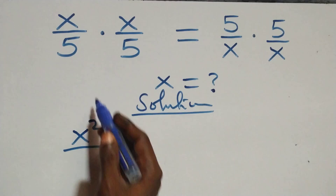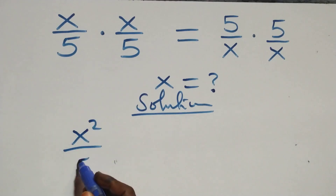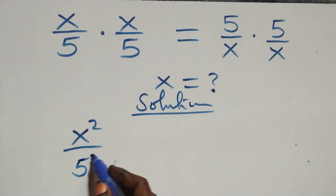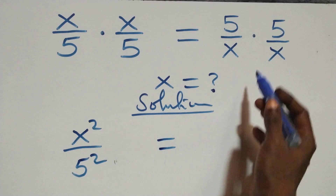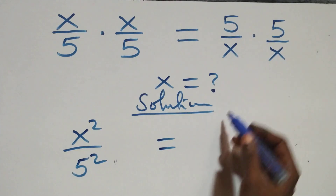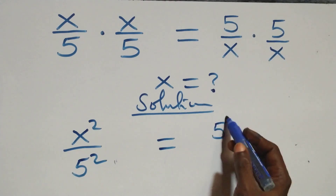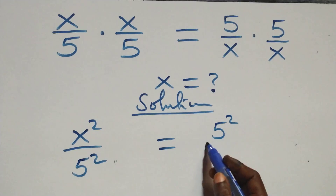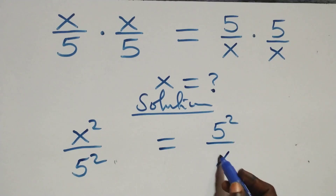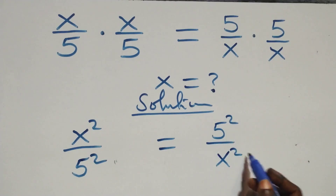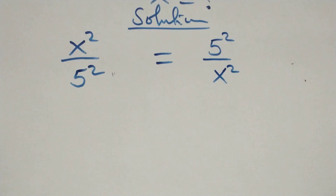Then also 5 times 5, that's 5 squared. Equals to — this side as well — 5 times 5, that's 5 squared. Then over x times x, that's also x squared.